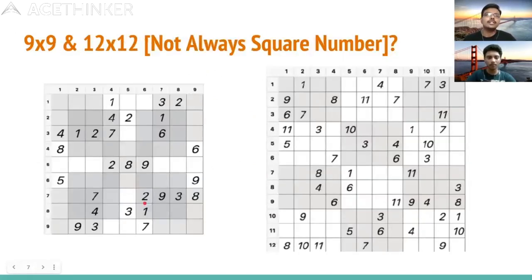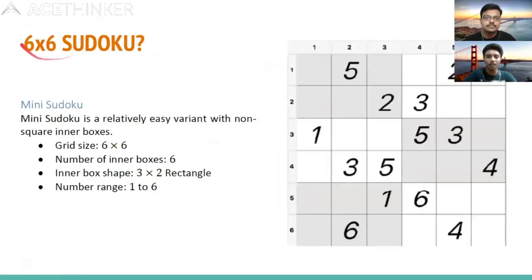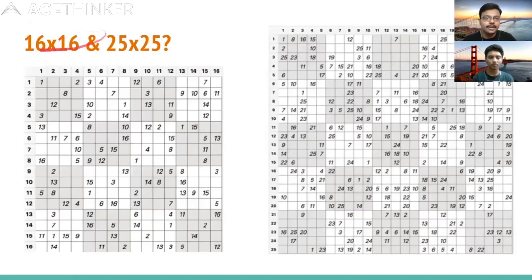There are also Sudokus where the size n is not a perfect square, like the 6×6 example and also 12×12. So n does not always have to be a perfect square like 1, 4, 9, 16, or 25. As n becomes larger, such as 16×16 or 25×25, the complexity of the puzzle also increases.